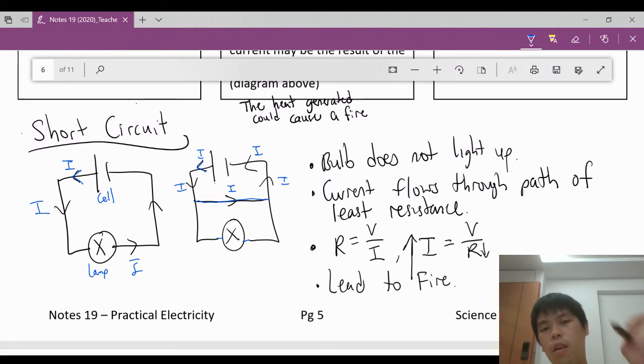So what is happening? If the insulation is damaged, the bulb will not light up. That's the first thing. Second, current will flow through this new path, the blue color one, because this is the path of least resistance as compared to the lamp. So it will flow through here. The lamp will not light up.